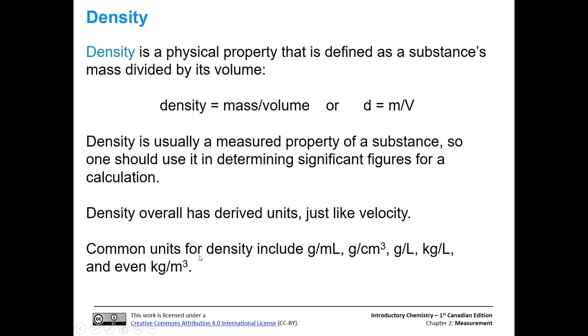Some really common units for density include grams per milliliter (often for liquids), grams per centimeter cubed (often used for solids), grams per liter, kilograms per liter, and even kilograms per meter cubed. The most common ones we're going to see are grams per milliliter or grams per centimeter cubed.